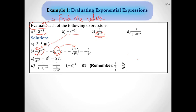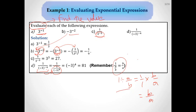For part D: we write it as 1 over negative 3 to the fourth. Using the shortcut — 1 divided by A over B equals B over A — we flip this fraction to get negative 3 to the fourth power. Since negative 3 is multiplied by itself 4 times, the result is positive: 3 to the fourth is 81, giving positive 81.